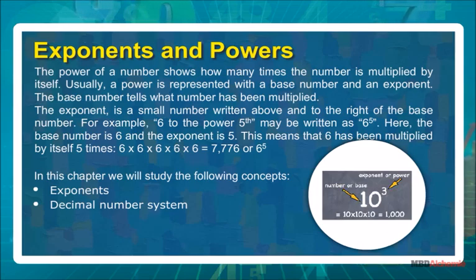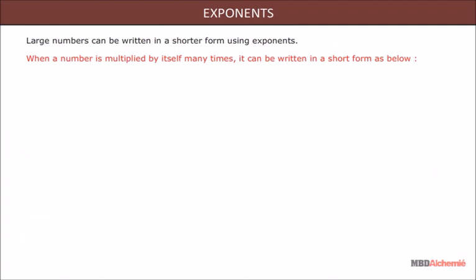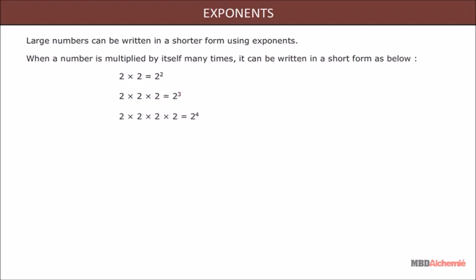Large numbers can be written in a shorter form using exponents. When a number is multiplied by itself many times, it can be written in short form. If 2 is multiplied twice to itself, it is equal to 2 squared. If 2 is multiplied thrice to itself, it is equal to 2 cubed. If 2 is multiplied 4 times to itself, it is equal to 2 to the power 4. 2 multiplied 5 times to itself is equal to 2 to the power 5.